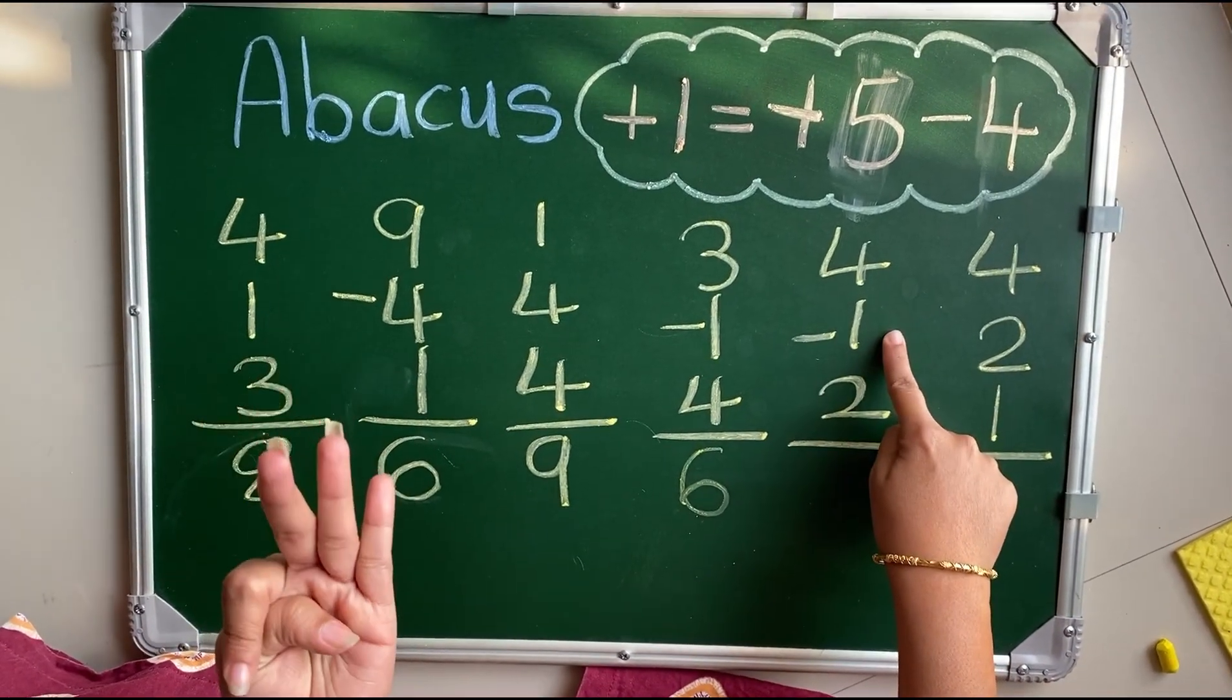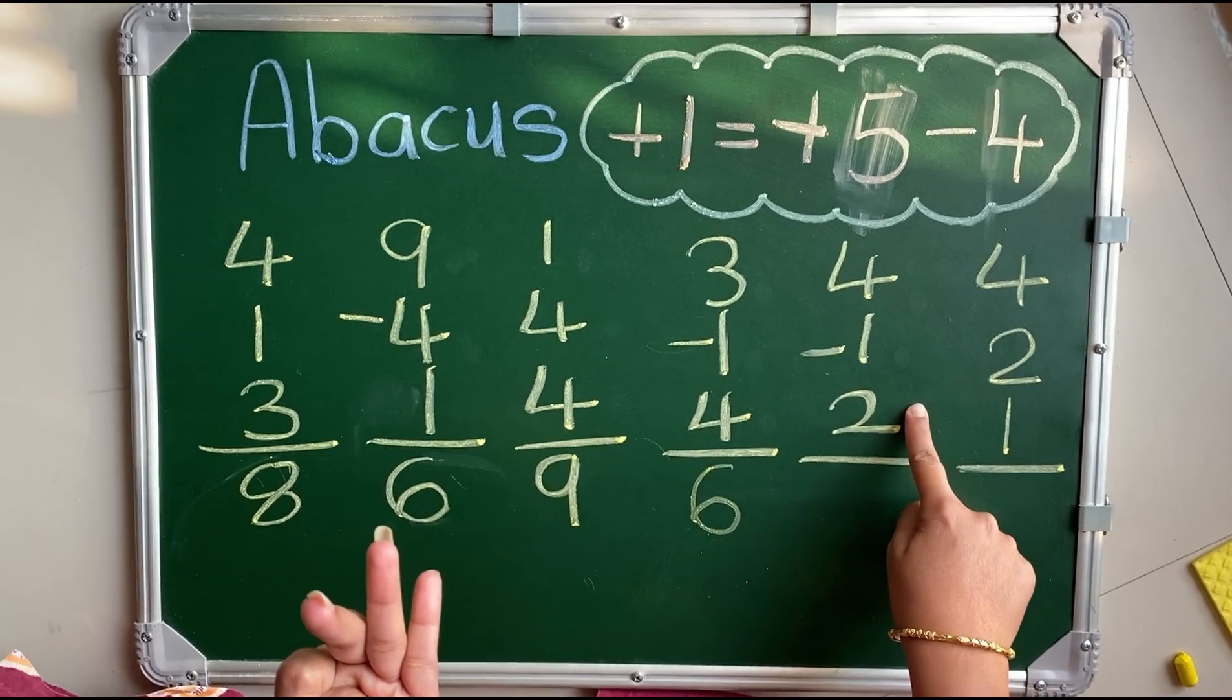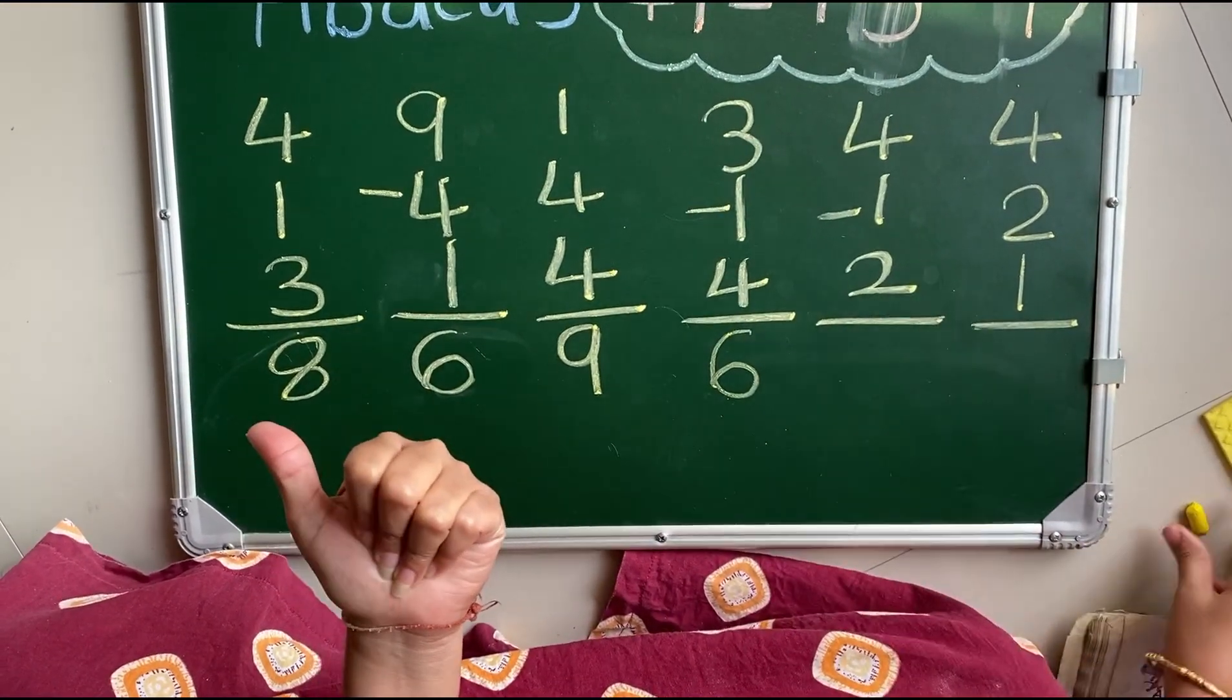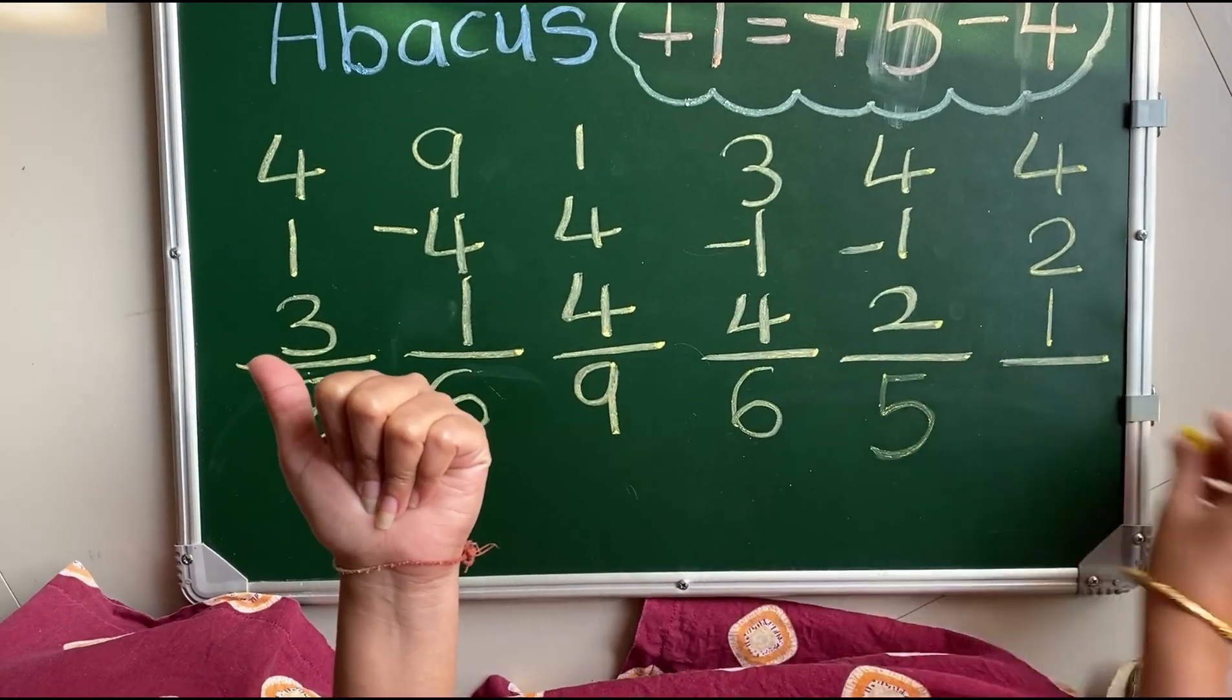4 minus 1 plus 2. For plus 2 what we will do? Plus 5 minus 3. Answer is 5.